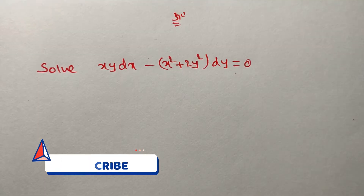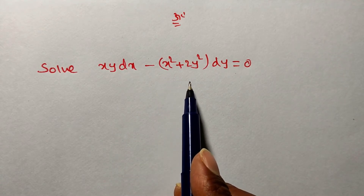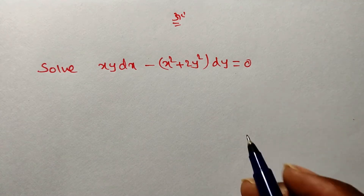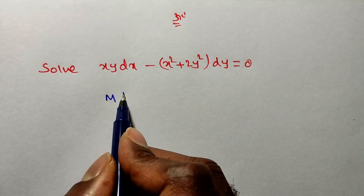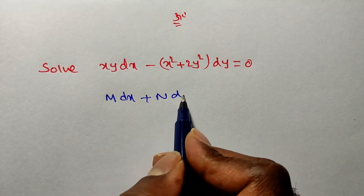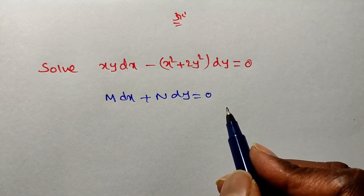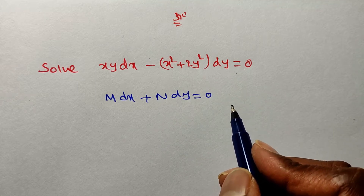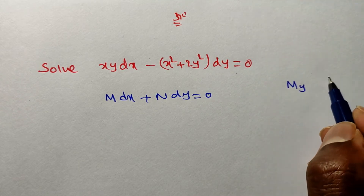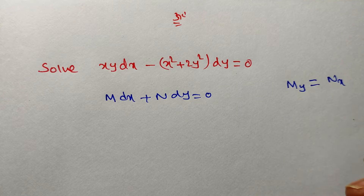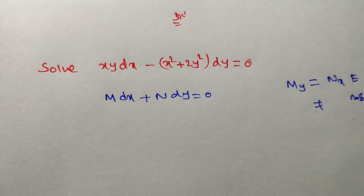My problem is: solve xy dx minus (x² + 2y²) dy = 0. You observe the given problem is in the form M(x,y) dx + N(x,y) dy = 0. Whenever the given differential equation is in M dx + N dy = 0 form, we have to verify whether it is exact or non-exact. To verify, we find ∂M/∂y and ∂N/∂x. If both are equal then it is exact; if not equal then it is a non-exact differential equation.